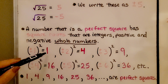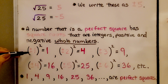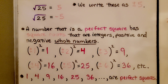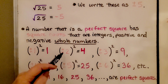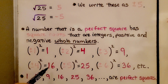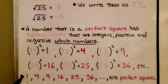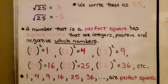So we know that 1 is a perfect square because 1 times 1 is 1, and negative 1 times negative 1 is positive 1. For 4, we can do positive or negative 2. For 9, positive or negative 3. For 16, positive or negative 4. For 25, positive or negative 5. For 36, positive or negative 6. So 1, 4, 9, 16, 25, 36, and so on are perfect squares. 7 times 7 is 49, so 49 would also be a perfect square.